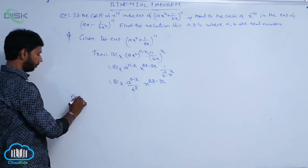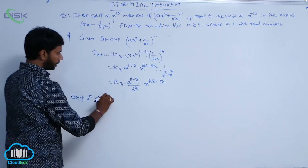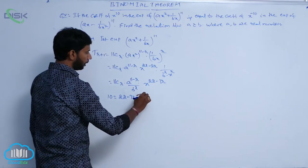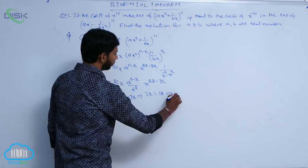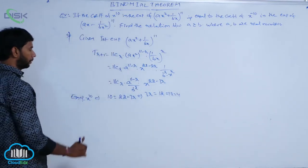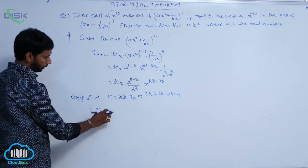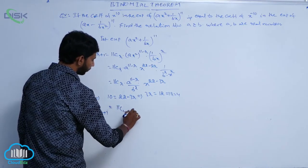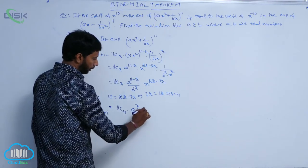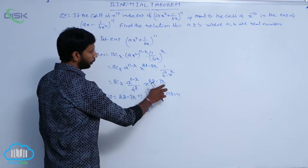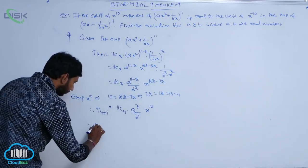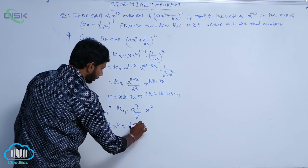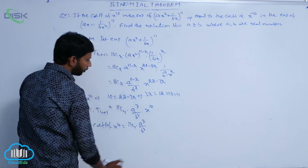Equating the power of x to 10: 10 = 22 - 3r, so 3r = 12, giving r = 4. Therefore T5 = 11C4 · a^7 / b^4. The coefficient of x^10 is 11C4 · a^7 / b^4. This is the first condition.